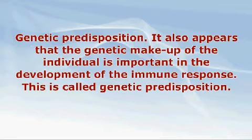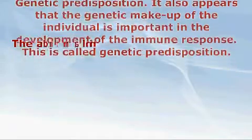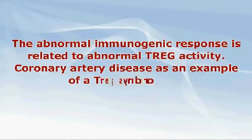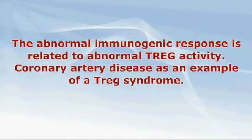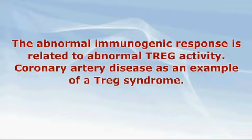Genetic predisposition also appears important in the development of the immune response — this is referred to as genetic predisposition to disease. In summary, TREG syndromes are diseases which are the result of an abnormal immunogenic response to an immune or autoimmune agent in a genetically predisposed individual, resulting in organ inflammation or cancer. The abnormal immunogenic response is related to abnormal TREG activity.